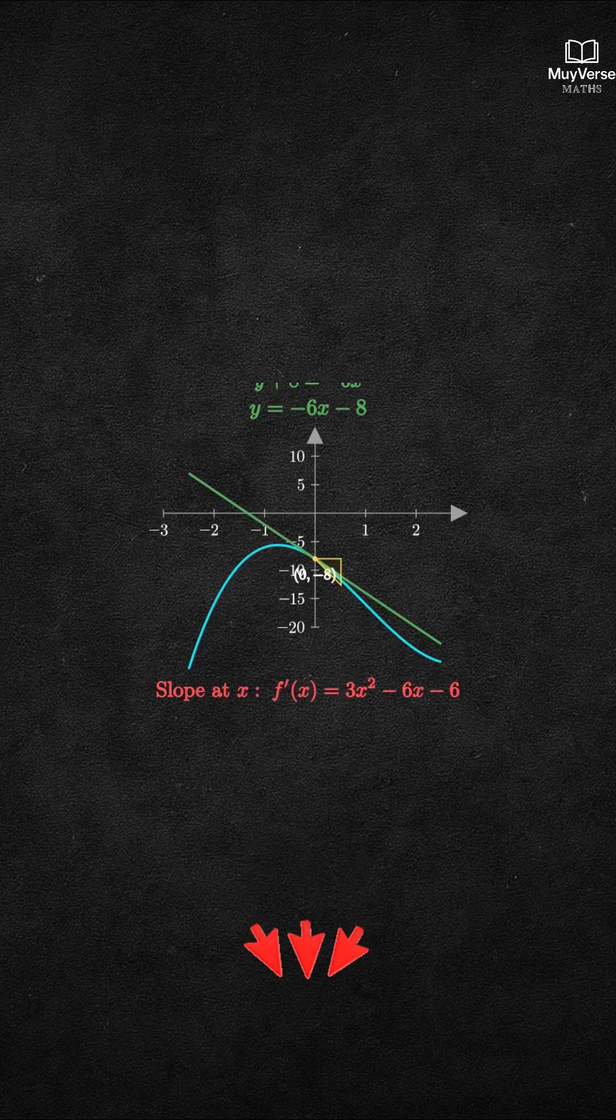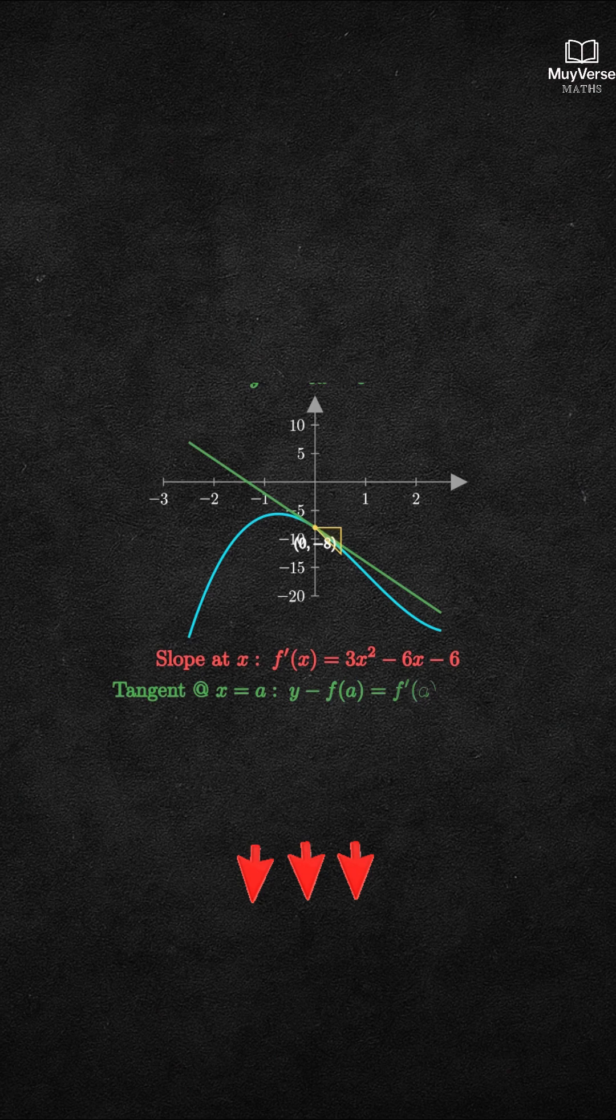Summary: The tangent slope at any x is 3x squared minus 6x minus 6. And the tangent line at x equals a is y minus f(a) equals f prime of a times x minus a.